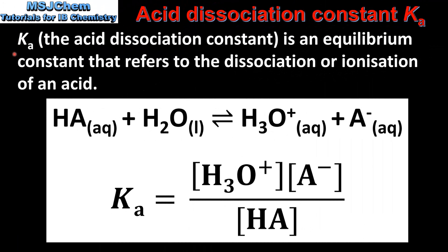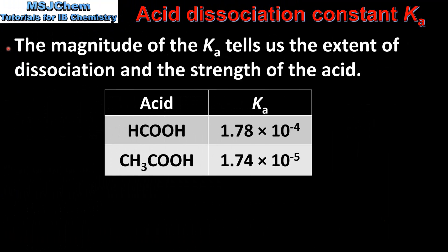The Ka, the acid dissociation constant, is an equilibrium constant that refers to the dissociation or ionization of an acid. For a weak acid HA, the products are the hydronium ion and the conjugate base of the weak acid. In the Ka expression, the numerator contains the concentration of hydronium ions and the concentration of the conjugate base, while the denominator contains the concentration of the weak acid. Water is not included in the expression. The magnitude of the Ka tells us the extent of dissociation and the strength of the acid.